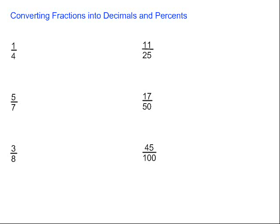Let's take a look at converting fractions into decimals and percents. If we have a fraction, in order to convert it into a decimal, all we need to do is divide the top number by the bottom number. Because a fraction is really just division that hasn't been worked out.